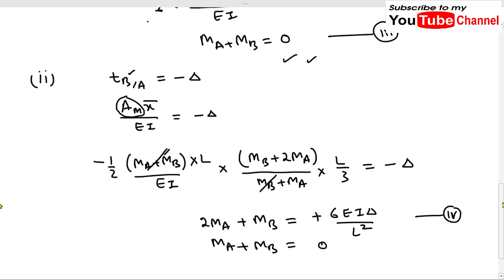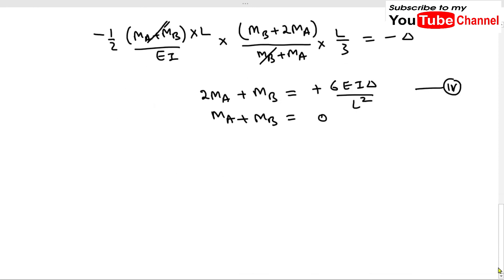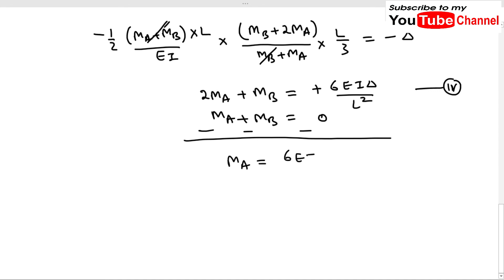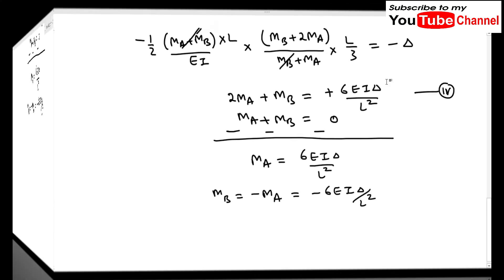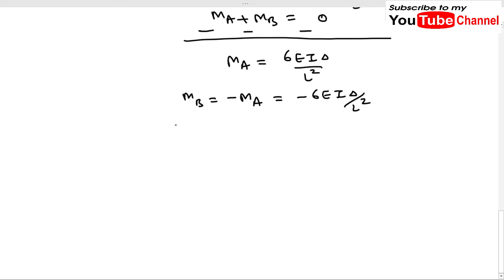Solving these two equations simultaneously: subtracting the third from the fourth gives M_A = 6EIδ/L². And since M_A + M_B = 0, M_B = -M_A = -6EIδ/L².